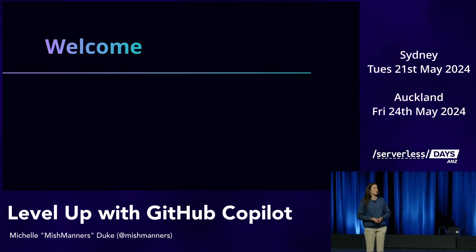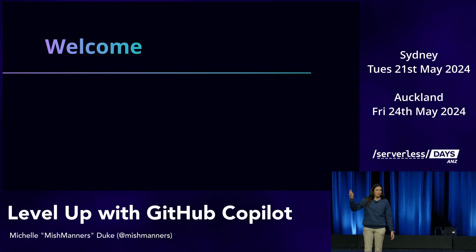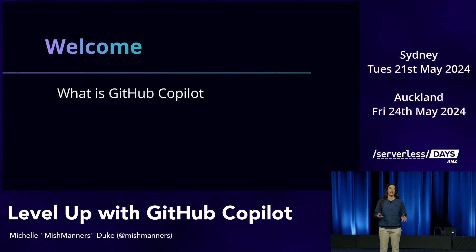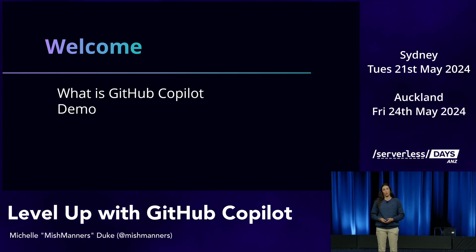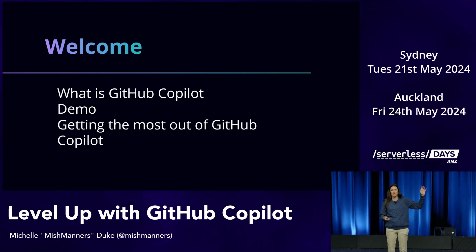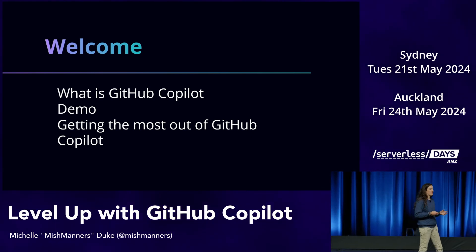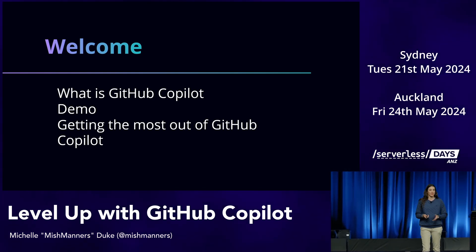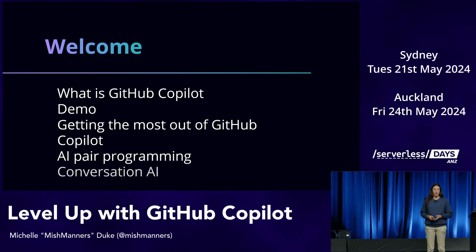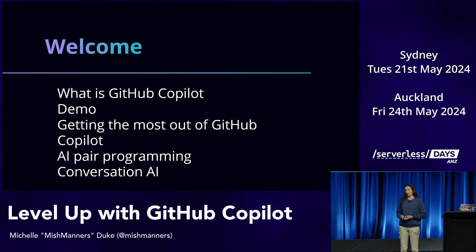Hopefully lots of you in the room have tried different AIs — ChatGPT, DALL-E, Midjourney. These types of generative AI are really taking the world by storm. The one I want to talk to you today about is GitHub Copilot. We'll have a look at a demo, look at how to get the most out of it, and talk about who's already using it in the room. Hopefully some of the things I'm showing you will help you build your serverless applications and with your general coding problems.